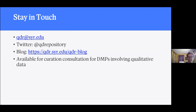One question: how often is one expected to update the DMP? By funders in the US, typically not at all. In the EU, they expect something like yearly updates. Personally, I think looking at it and seeing if you need to update it about once every six months to a year is about the right approach.